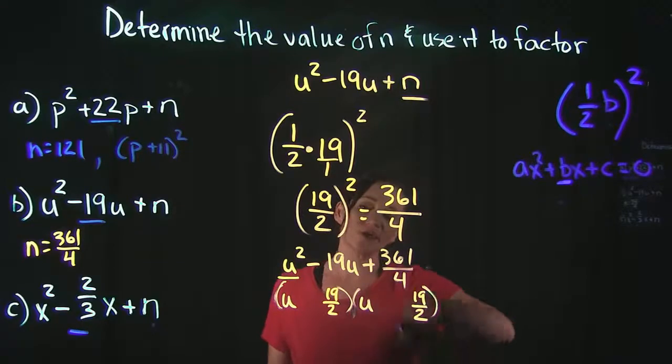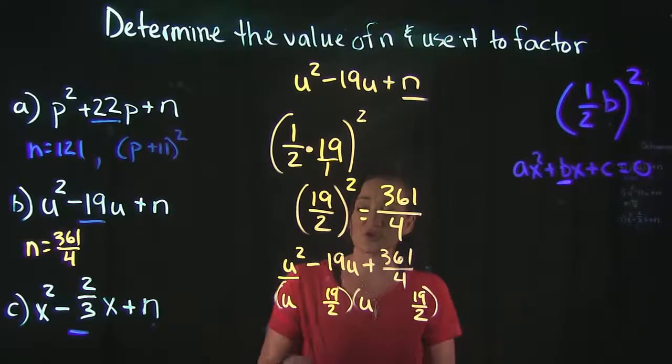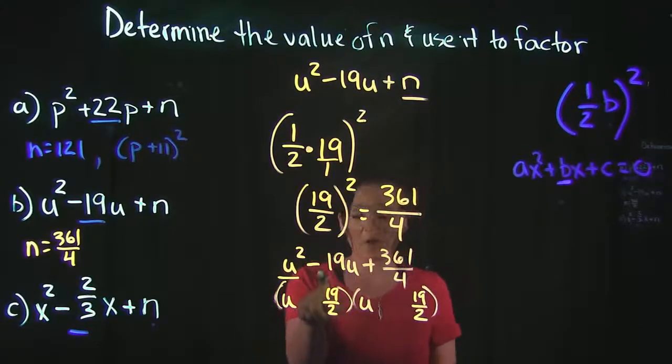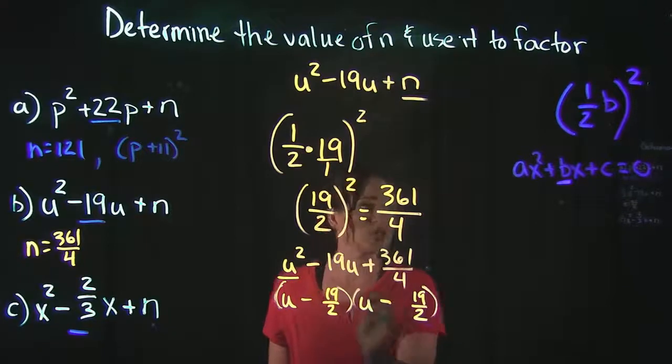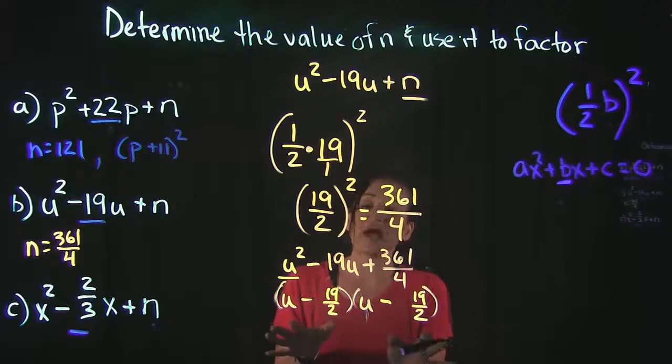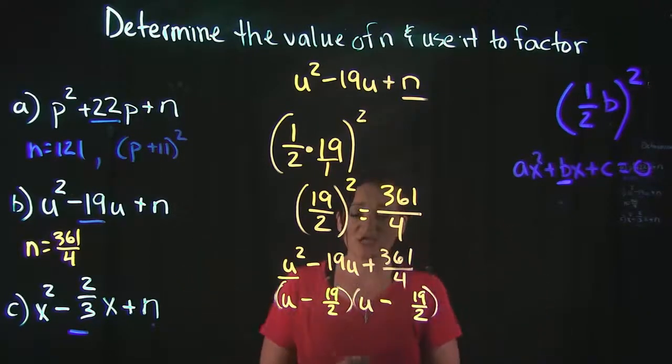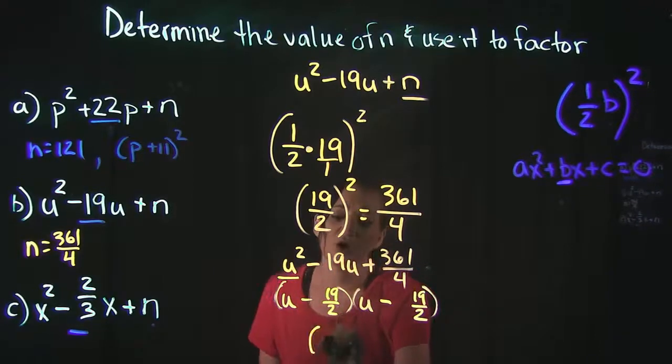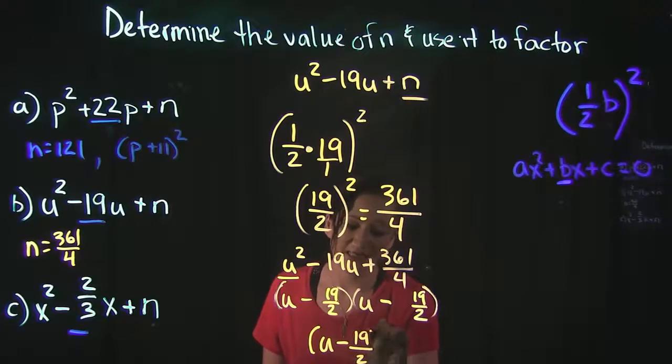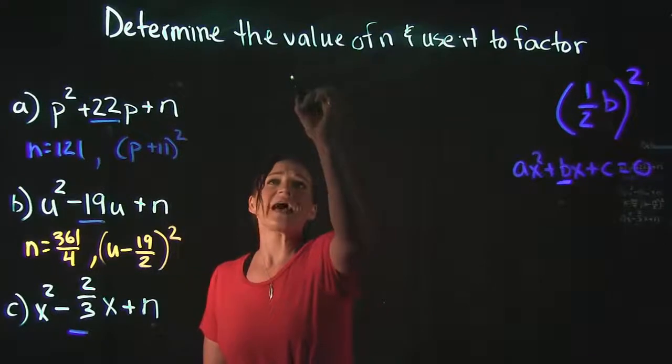Looking at our signs here, remember that these are going to be the same factor, so they're either both a plus or they're both a minus. Because we have this negative here for our middle term, we know this is going to be negative. And again, the whole point of this is to get the same factor in these, because of the type of factoring problem they are. So again, just to have proper notation here, we're going to combine these into one and just say that this is u minus 19 over 2 squared.